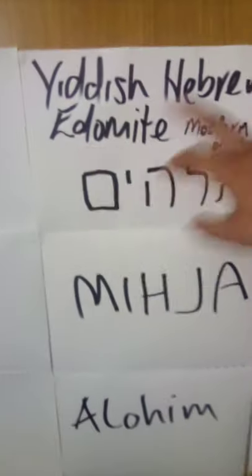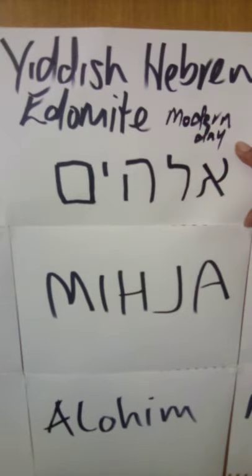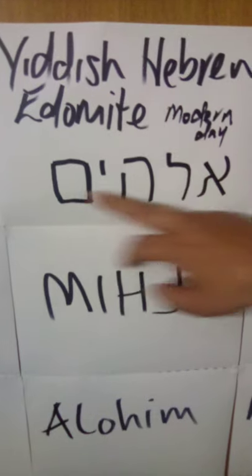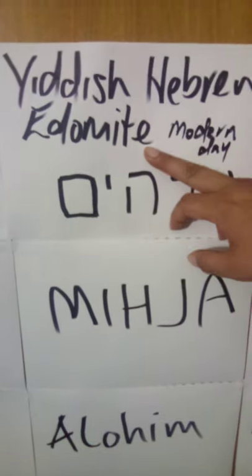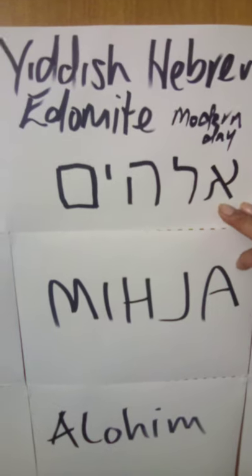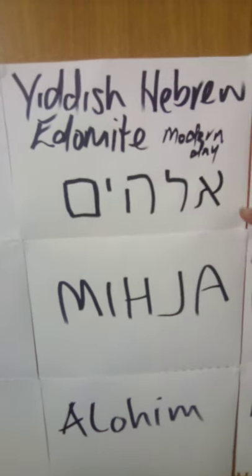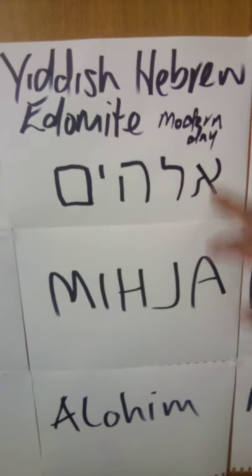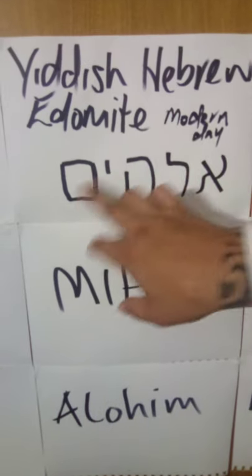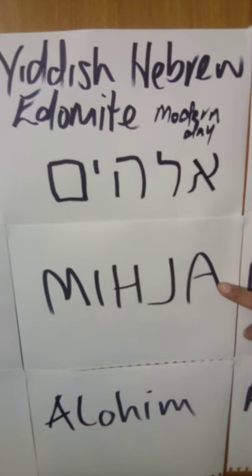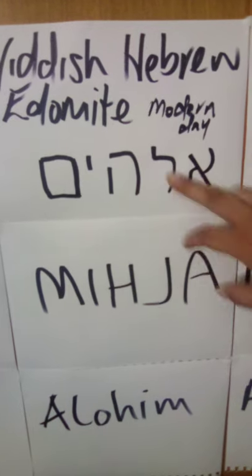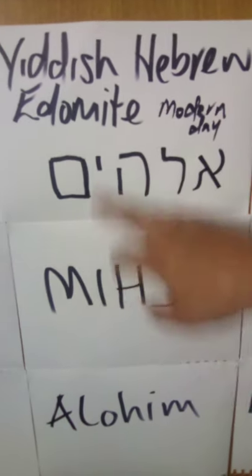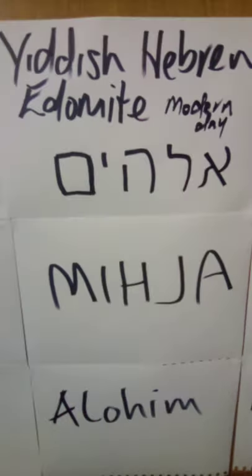We're going to look at Yiddish Hebrew — this is Edomite Hebrew, this is modern-day Hebrew. If anyone writes in this language they're Edomite, not an Israelite. This is the Edomite Hebrew language; they're still Hebrews but they're Edomite Hebrews. This character is the letter 'ah,' this character is 'la ha' — that's where the word Elohim came from.